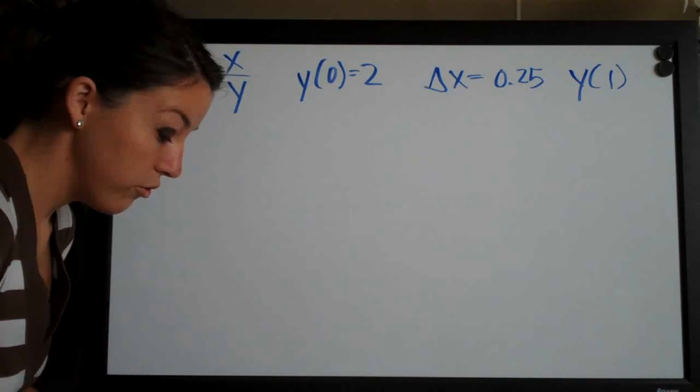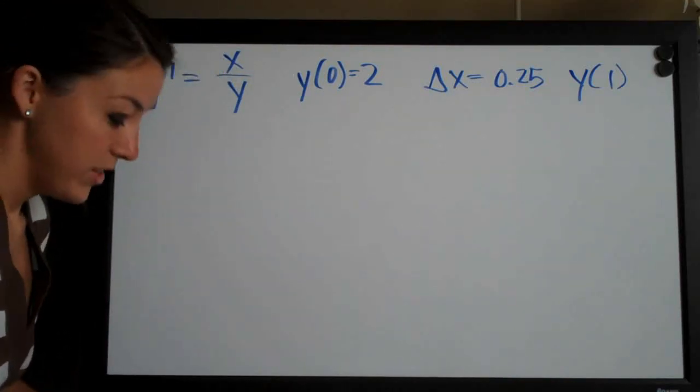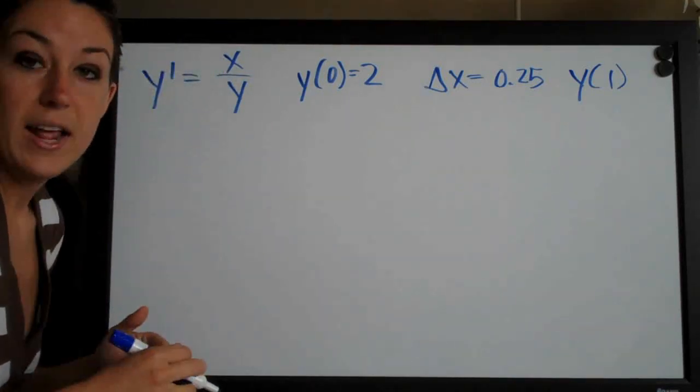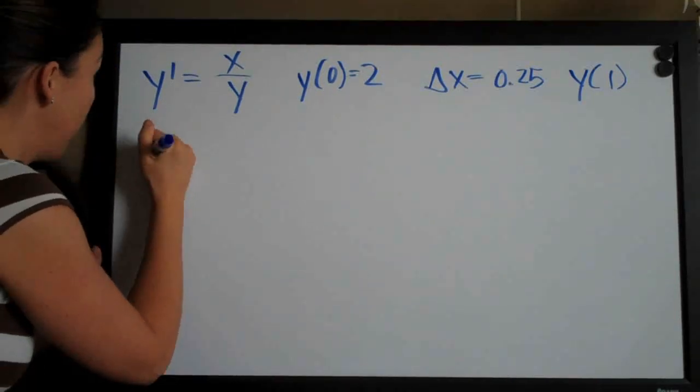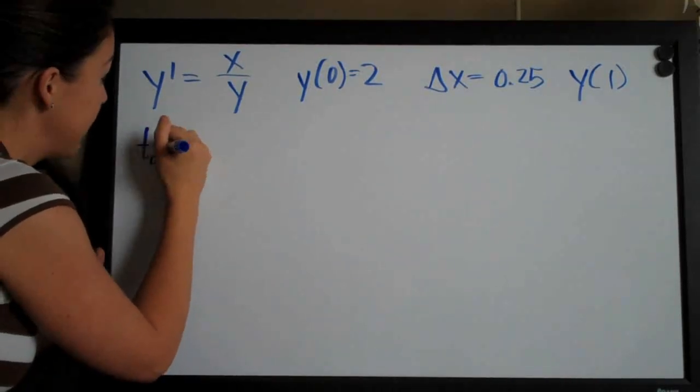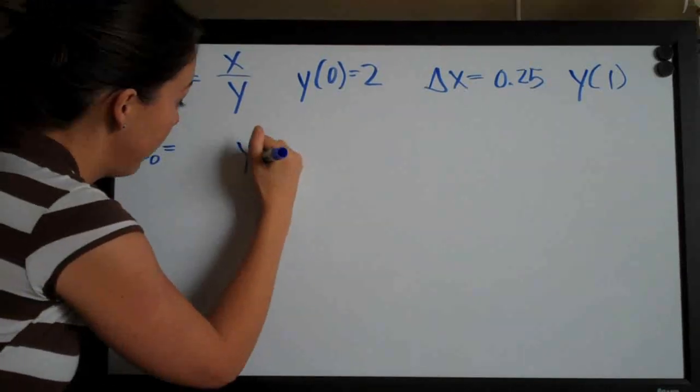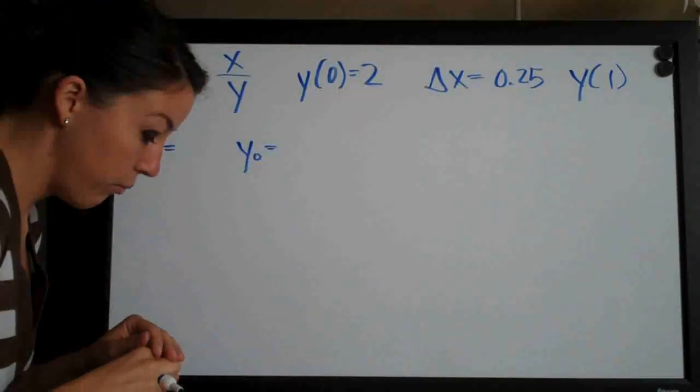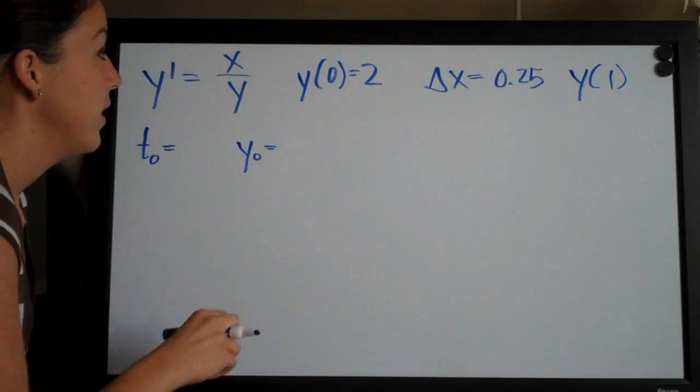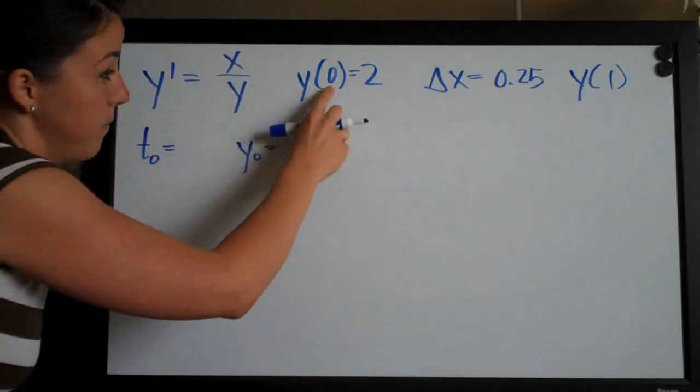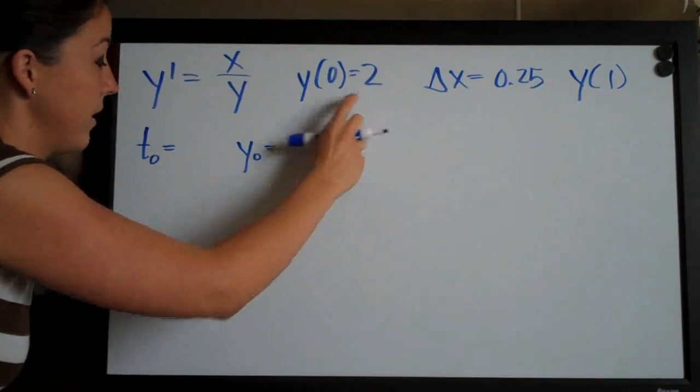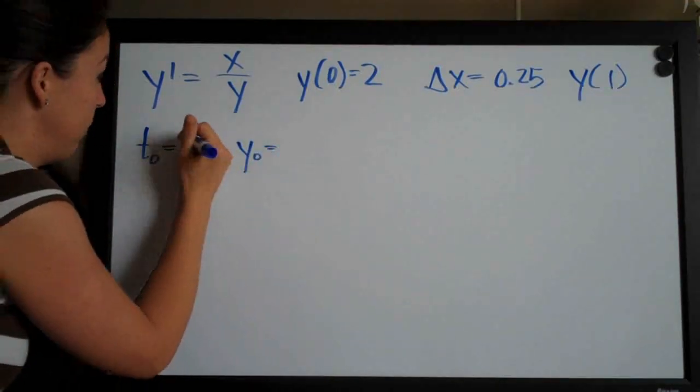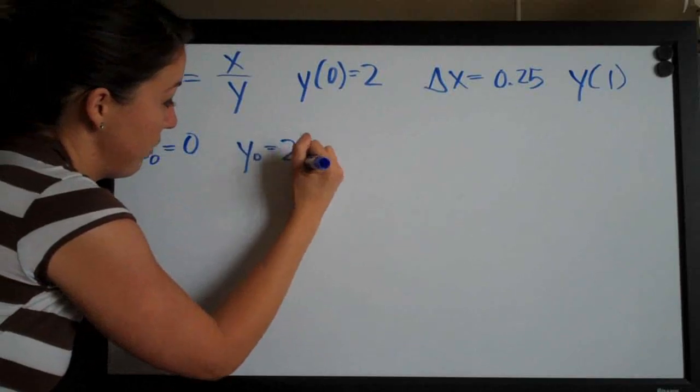As with any Euler's Method problem, the first thing we're going to want to do is start creating our table of values. We always start with t of 0 and y of 0, and we get both of those values from our initial condition. 0 is always representing t here, and then 2 is what we use for y of 0. So we can go ahead and write those values in.